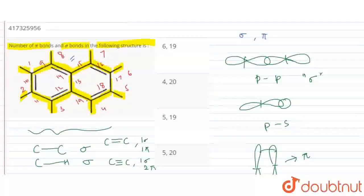So they will have sigma bonds. Any of the two atoms, if there is one bond, then it will have sigma bonds. So we have 19 sigma bonds.